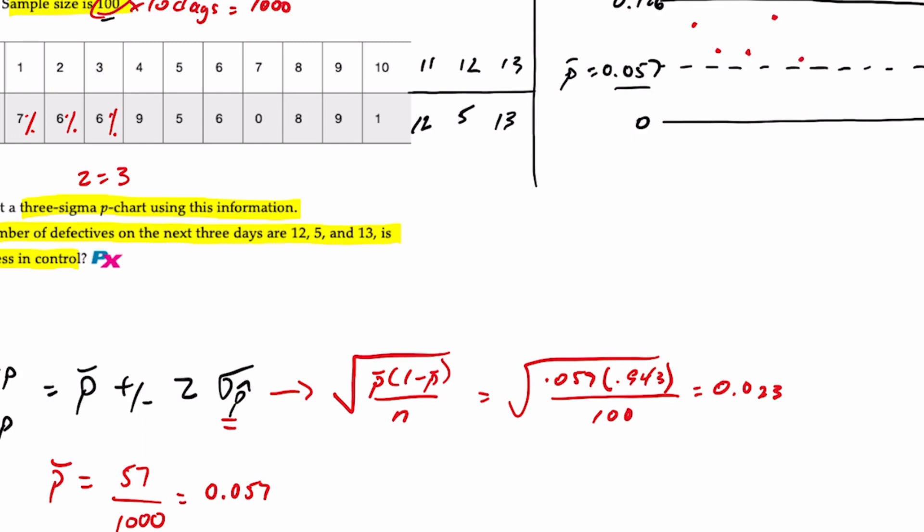Day six, 6%. Day seven, zero. Day eight is about 8%. Day nine is about 9%. Day 10 is 1%. Day 11 is 12%, so getting very close to our line. Day 12 is 5%. And day 13 is 13%.